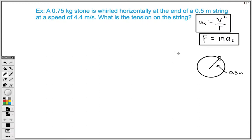And as always, it's always good to draw a picture of what's going on. So here we have a picture of a stone attached to a string. It's traveling in that circular motion. And we know that our string length is 0.5 meters.